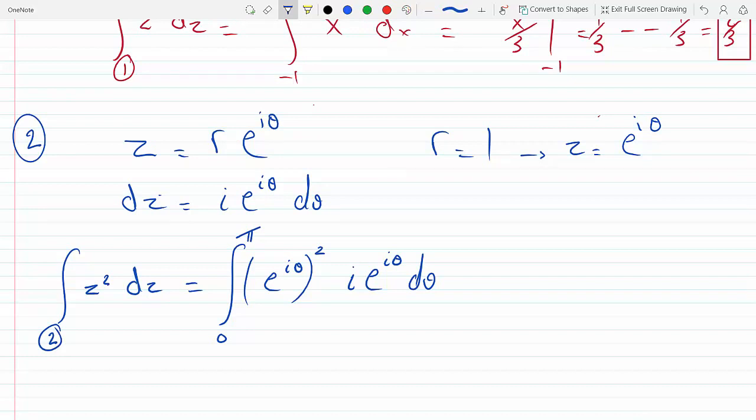This becomes e to the two i theta times i times e to the i theta d theta from zero to pi. We can combine these two, so we get zero to pi i e to the three i theta d theta.